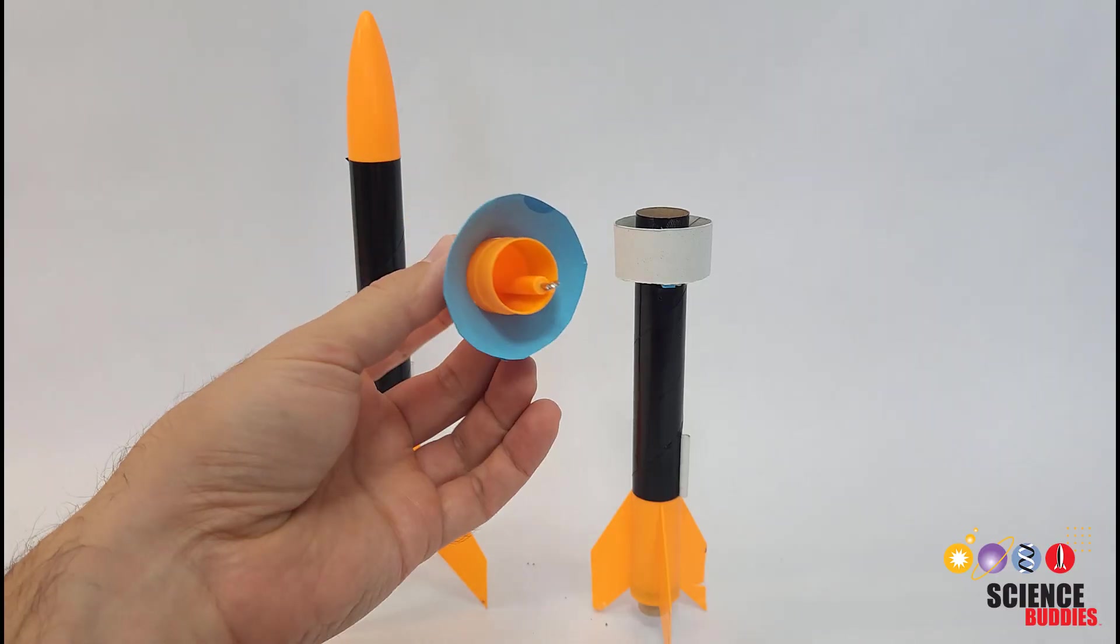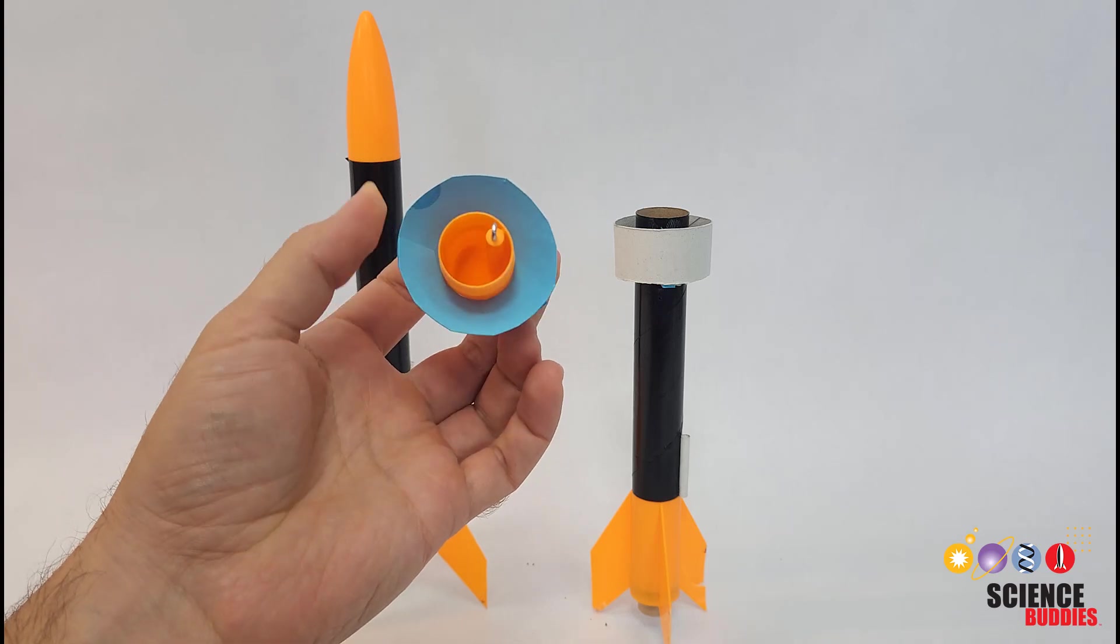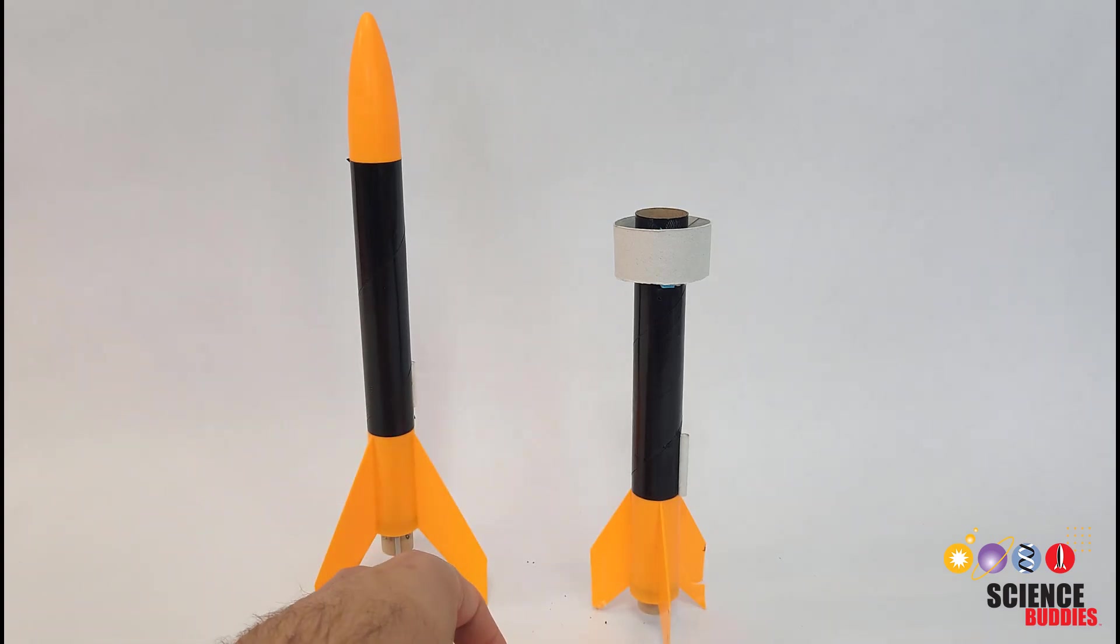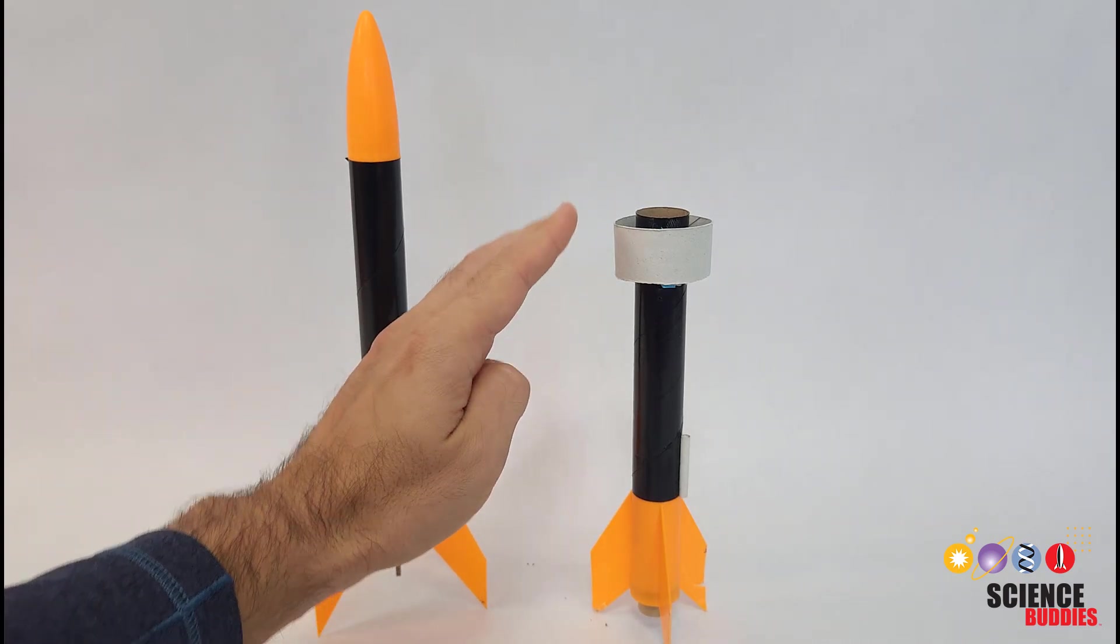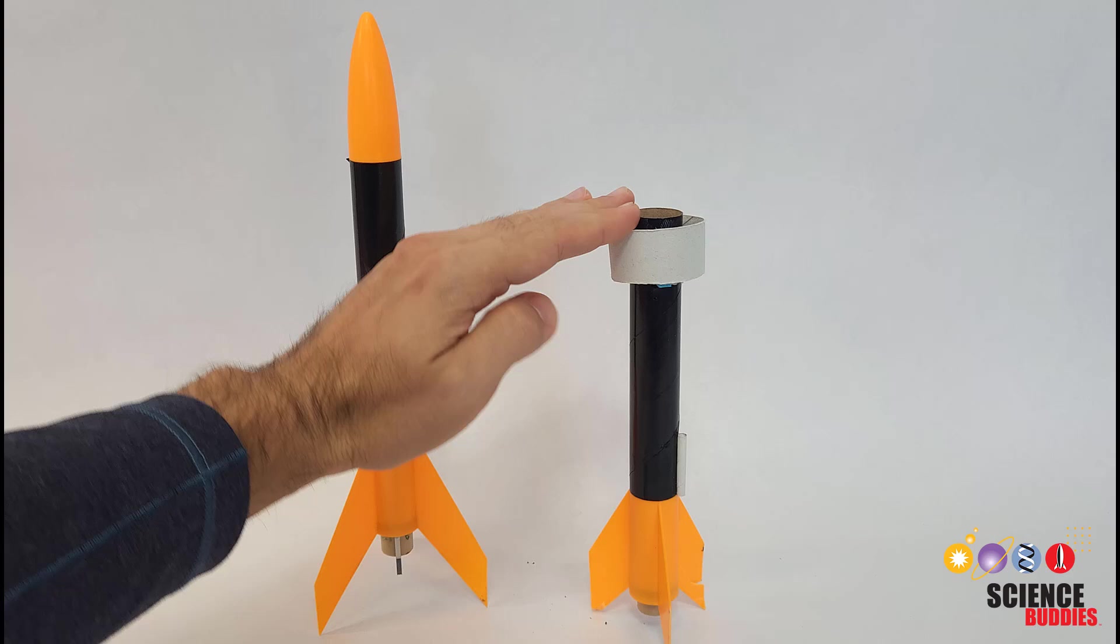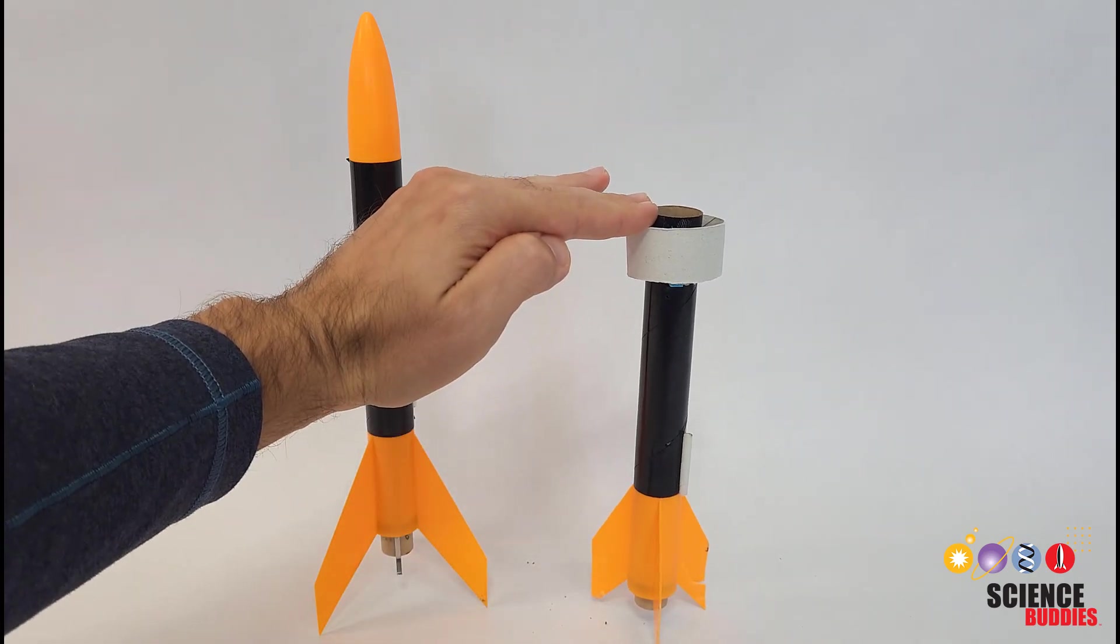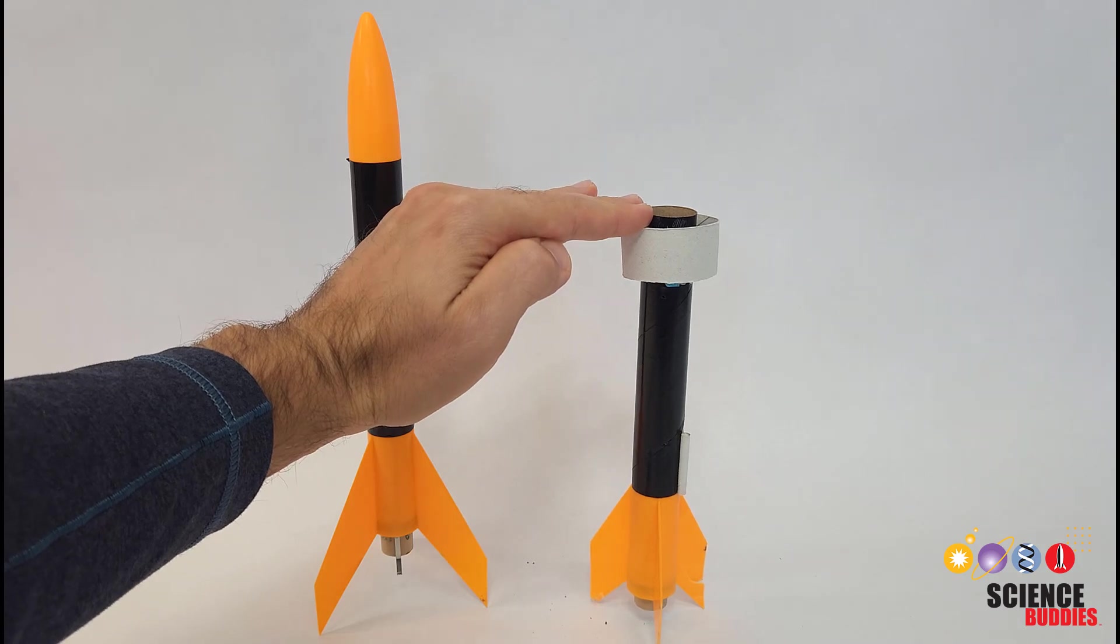There are different methods you could use to accomplish this. For example, packing more weight like modeling clay into the nose cone to have a bigger impact on the shift in the center of mass. Or trying a different fin style, like umbrella style or hinged fins that fold flat against the rocket's body while it's ascending and then deploy during landing when the air is coming in the opposite direction.